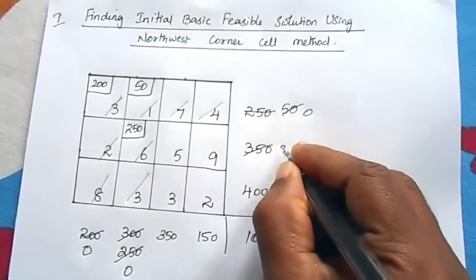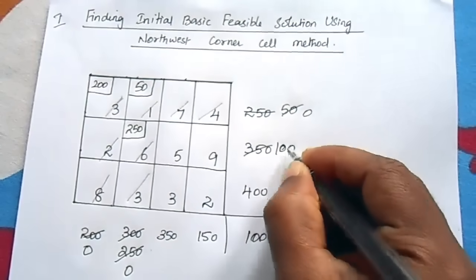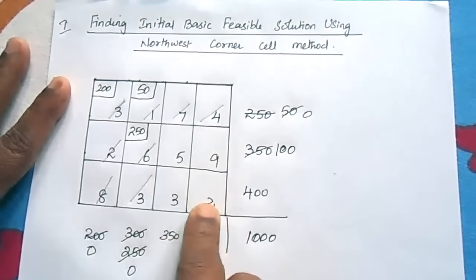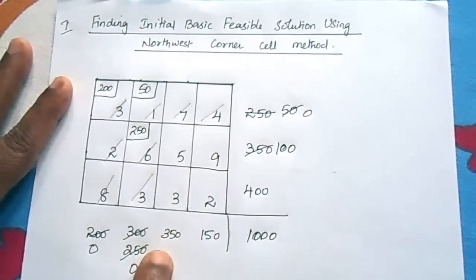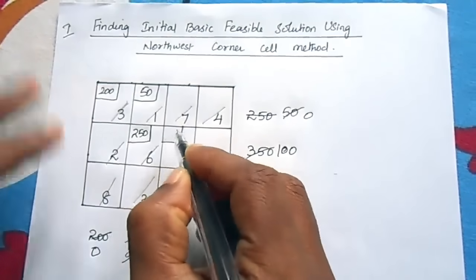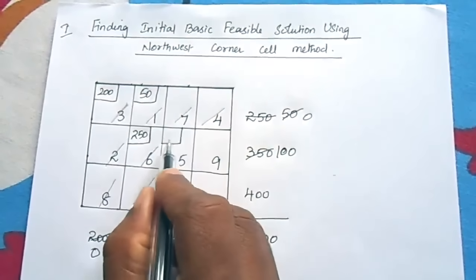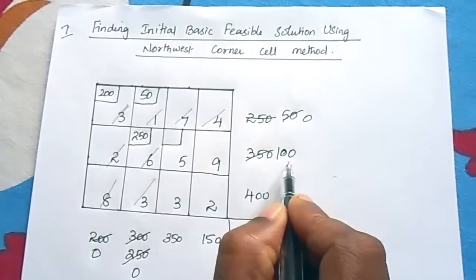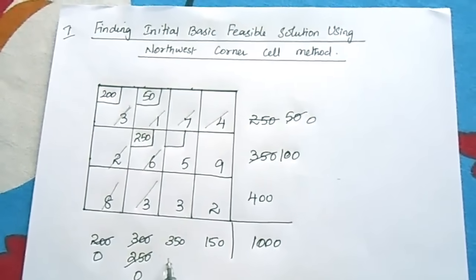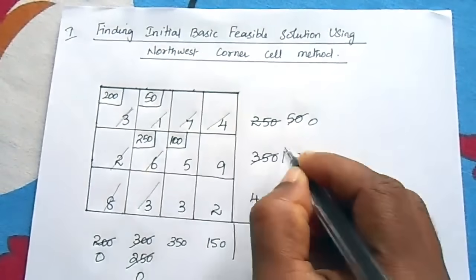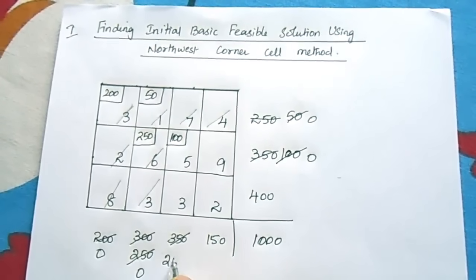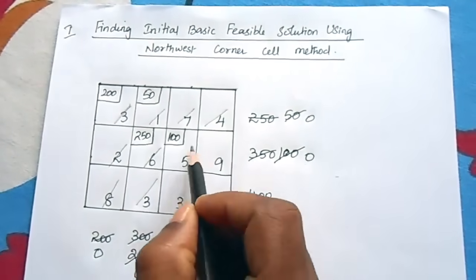Now with 2 rows and 2 columns, the Northwest corner is the second row, third column. The row value is 100 and the column value is 350. The least is 100, so allocate 100. The row value becomes 0 and is cancelled. The remaining third column balance is 250.